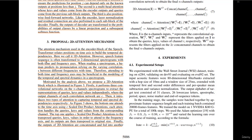However, speech feature sequences often transform to two-dimensional spectrograms with both the time and frequency axes. When reading a spectrogram, a human predicts pronunciation relying on varying correlations between different frequencies with time. Therefore, attending to both time and frequency axes may be beneficial to modeling the temporal and spectral dynamics in a spectrogram. Motivated by this analysis, the authors propose a 2D attention block, illustrated in Figure 3.